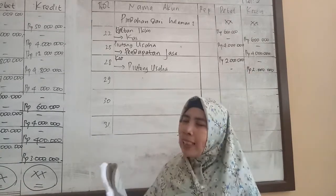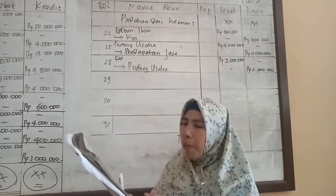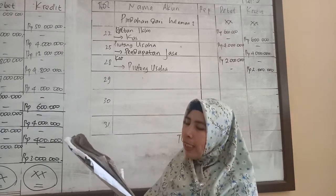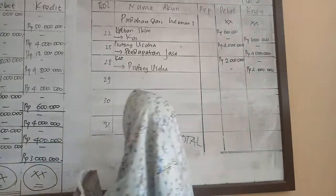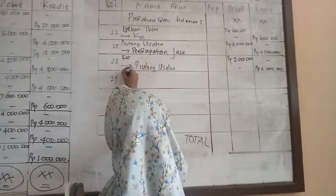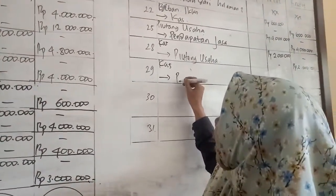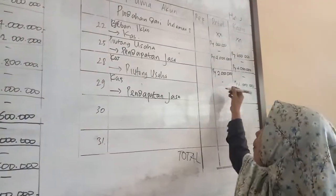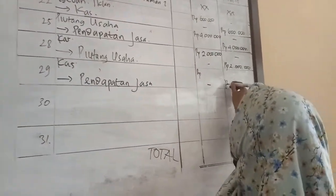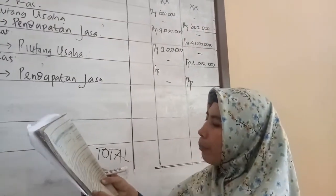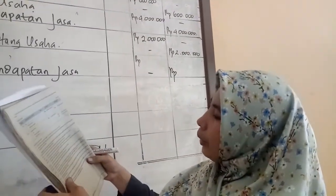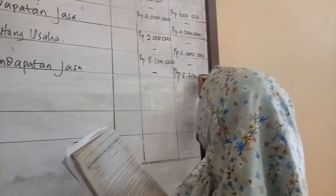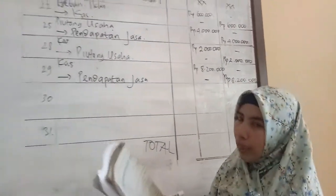Transaksi tanggal 29, menerima uang tunai untuk pekerjaan yang telah diselesaikan sebesar Rp8.200.000. Kasnya bertambah pada posisi debit, pendapatan jasa juga bertambah pada posisi kredit. Masing-masing sebesar Rp8.200.000. Seimbang.